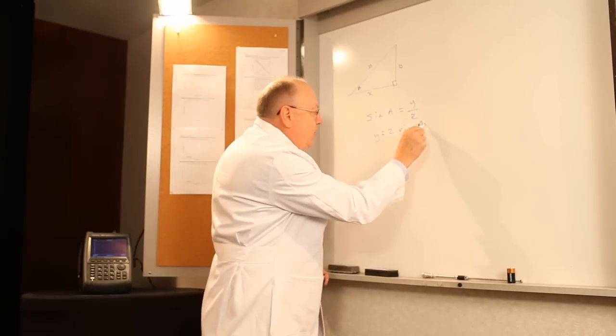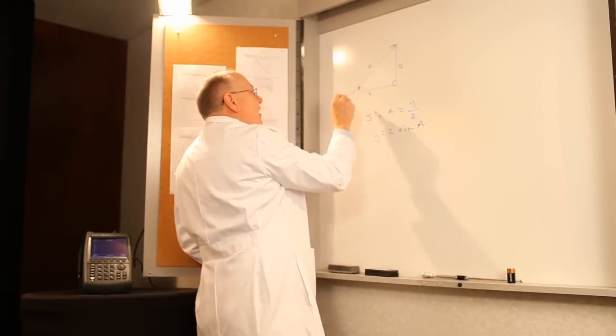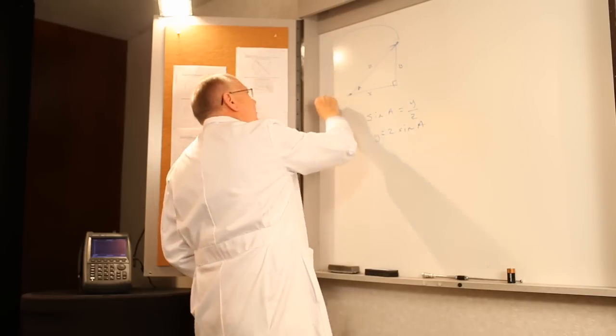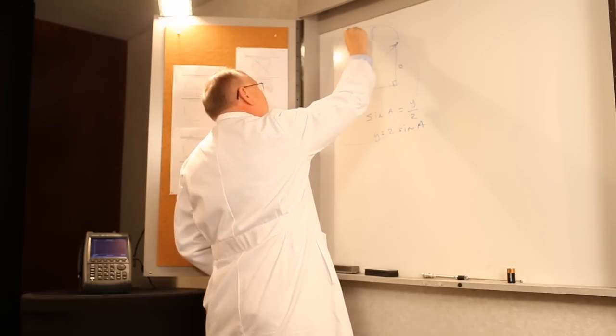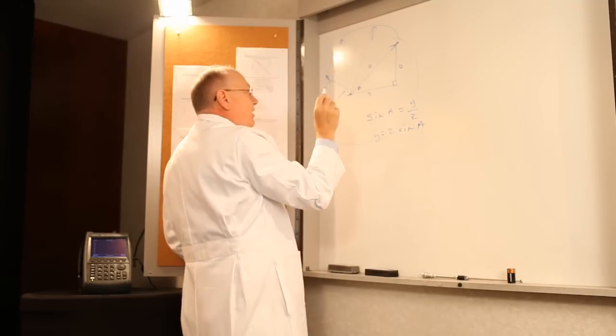Now, if the angle is changing, instead of this being just a triangle, it represents a vector from the beginning point out to the ending point. Then, if you have a circle and the angle is changing all the time, from here to here to here, at each instant the value of Y is changing.